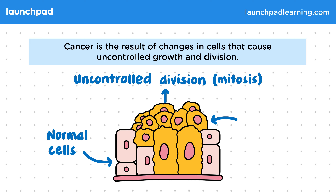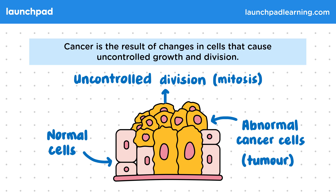As a result you end up with abnormal cancer cells which can all group together to form a tumour. The most common cancers in the UK are breast cancer, lung cancer, prostate cancer in men, and bowel cancer.